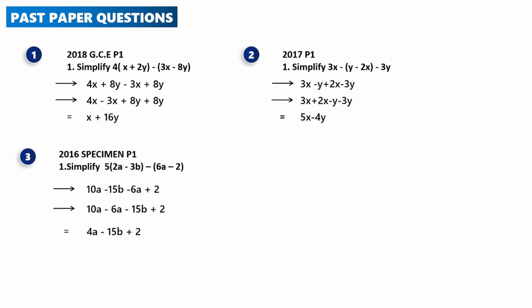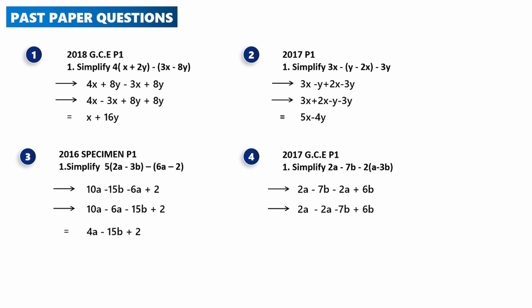2017 GCE Paper 1: Simplify 2a − 7b − 2(a − 3b). Expanding: −2 × a = −2a and −2 × −3b = +6b. So we get 2a − 7b − 2a + 6b. Grouping like terms: 2a − 2a = 0, and −7b + 6b = −b. The final answer is −b.